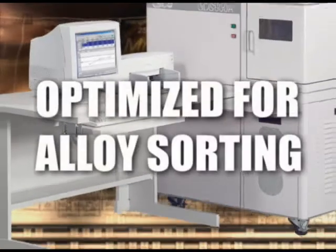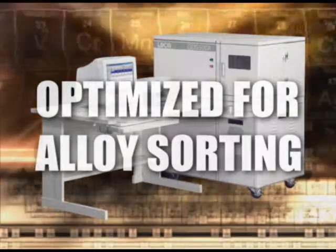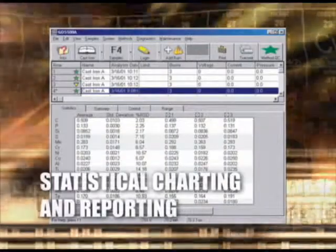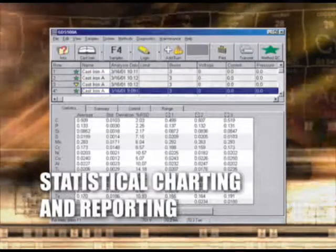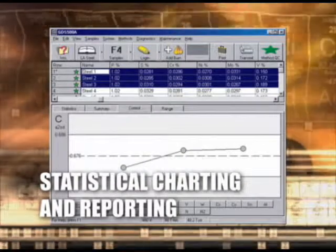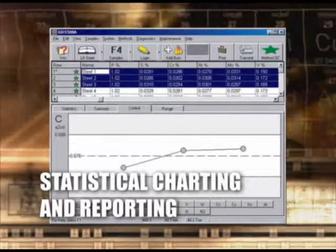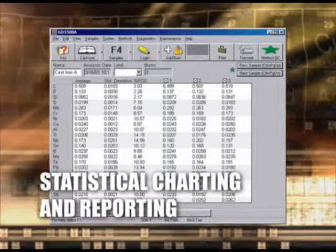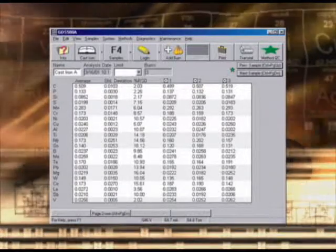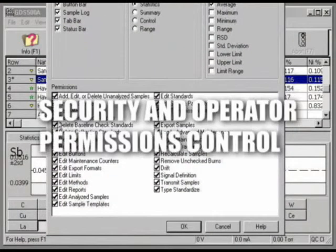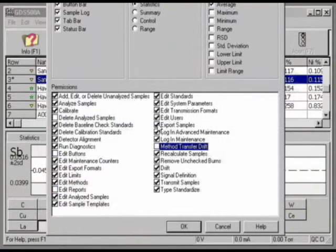The GDS500 is optimally suited for alloy sorting identification. Ease of operation and analytical flexibility are only a portion of the GDS500 software features. Statistical charting is available for sample reporting. Charts can be displayed for each sample showing analysis values with user-defined control limits. A security and permissions dialogue allows the supervisor to assign a login, password, and permissions for each operator.